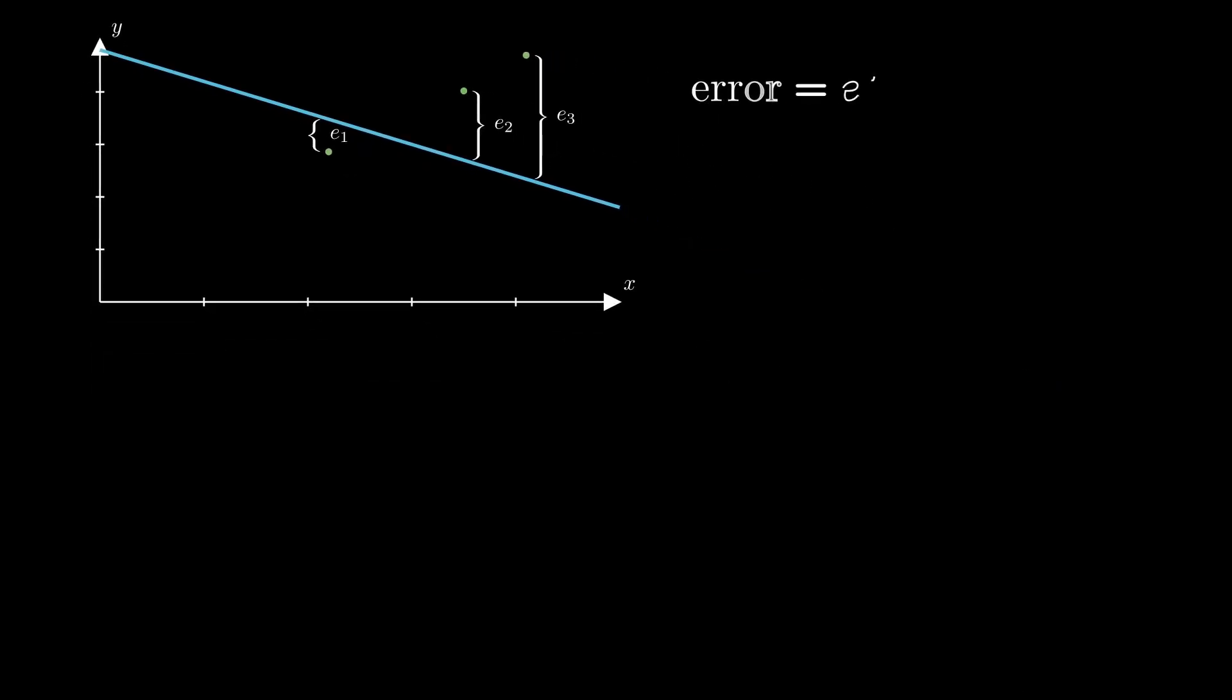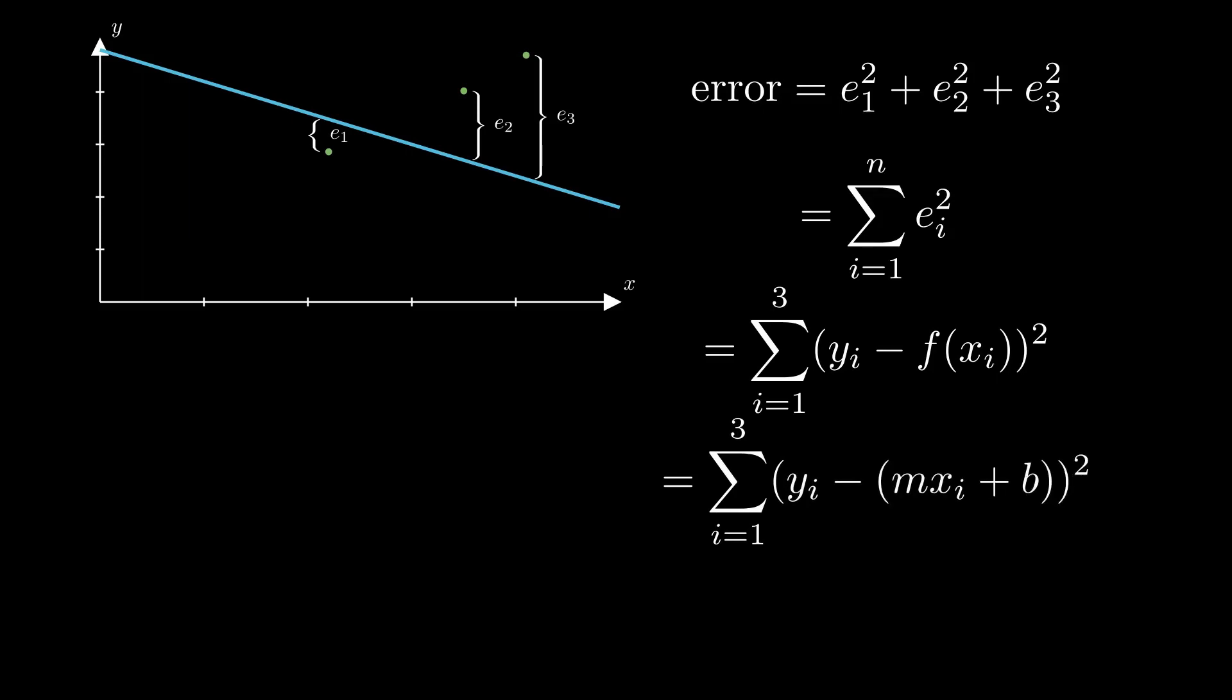The sum of all those squared errors represents how well the line fits over all points. We can do some further expanding when we realize that f of x is a line and can be written as mx plus b, where m is the slope and b is the y-intercept. When we substitute this in and rearrange, we get a function that represents the total error of our function in terms of the slope and y-intercept.